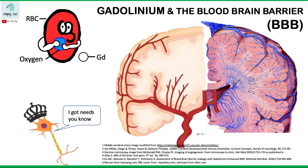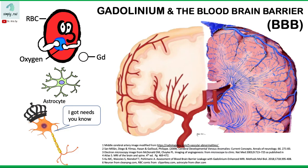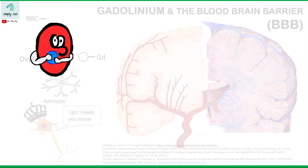Going back to our story, gadolinium traveling with the red blood cells within the vessels may or may not gain entry into the interstitium — the space in between the cells in the brain. This entry or non-entry is dependent on the status of the blood-brain barrier, which comes from the tight endothelial cell junctions, also guarded by the astrocyte foot processes. Thank you for your time, and I hope to see you again soon.